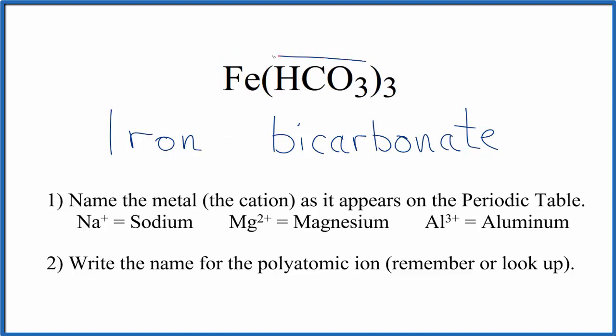The whole bicarbonate ion right here is one minus, and we have three of them. Three times one minus, that's three minus. The iron, it has to be three plus. So we're going to write Roman numeral three in parentheses right here in the name to show that three plus on the iron.